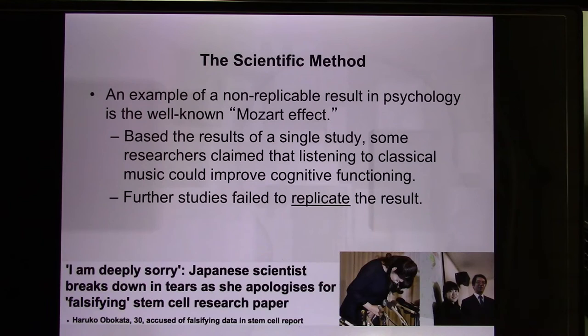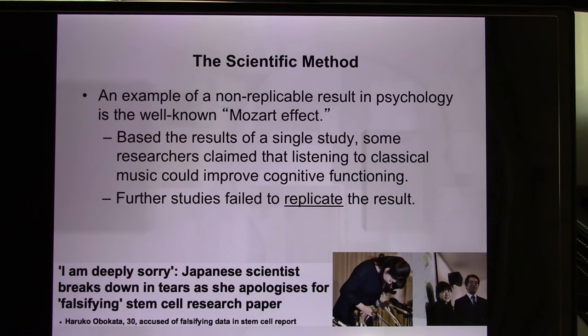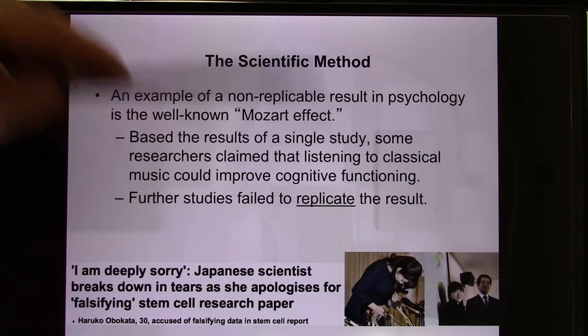In science, we talk about the Mozart effect. Your data need to be able to be replicated by other scientists. If not, there's a Mozart effect — you only have it once. This is actually a pretty famous event that happened in the science field. It involved a Japanese group; I remember about 10 years ago I listened to NPR and they talked about this for a few days.